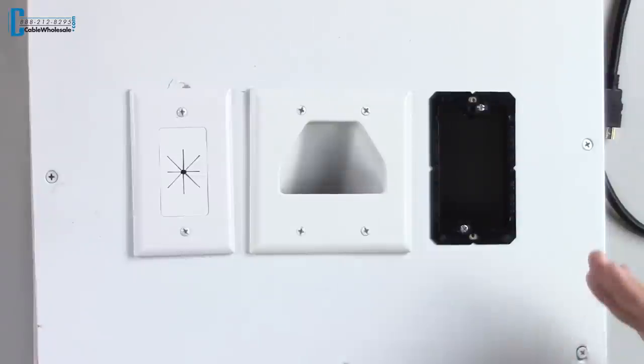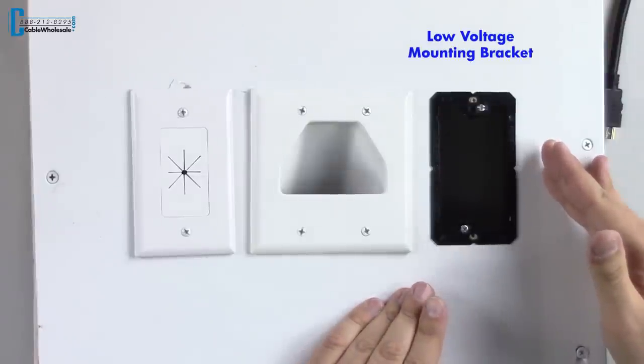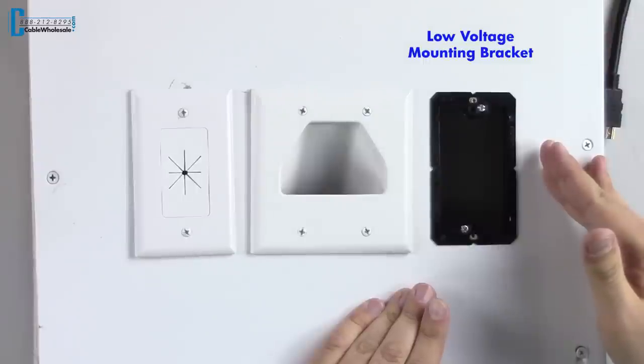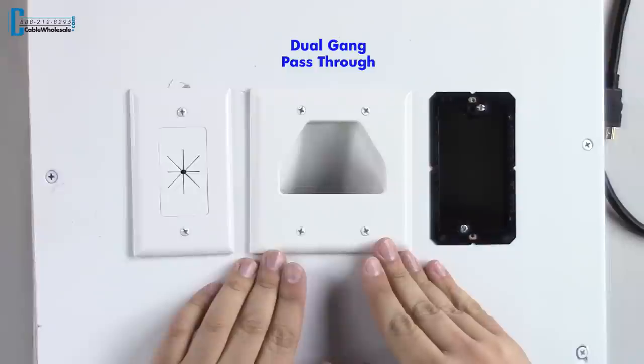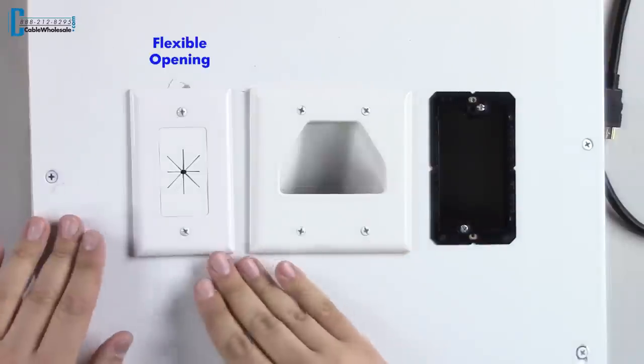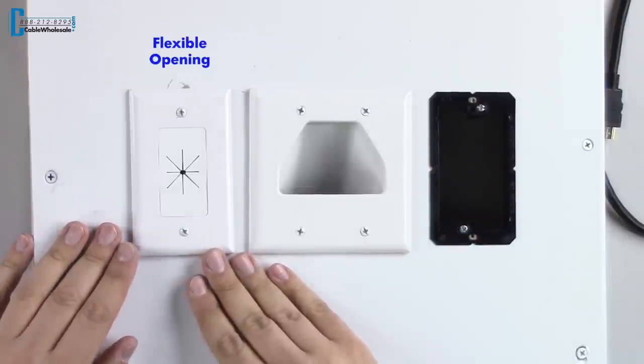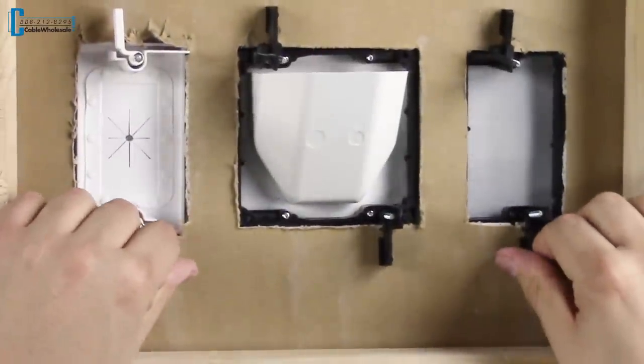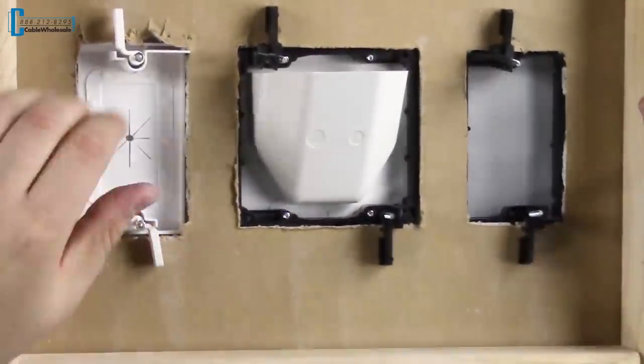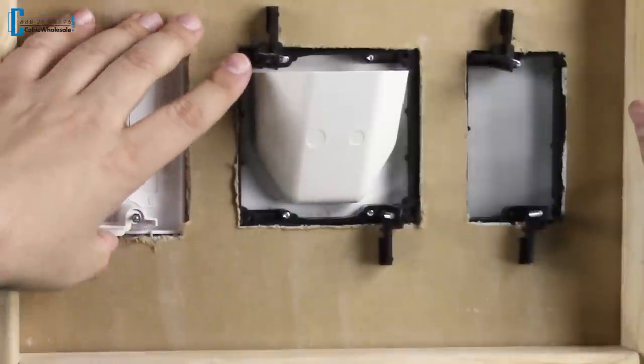So here we have three examples. We have the low voltage mounting bracket, if you do choose to go with these, and we also have a dual gang pass-through with the mounting bracket already installed. And this cable plate here is with the flexible opening. You can see on the back of the wall, this mounting bracket has these wings here that latch onto the drywall once they are screwed in to provide a secure connection.